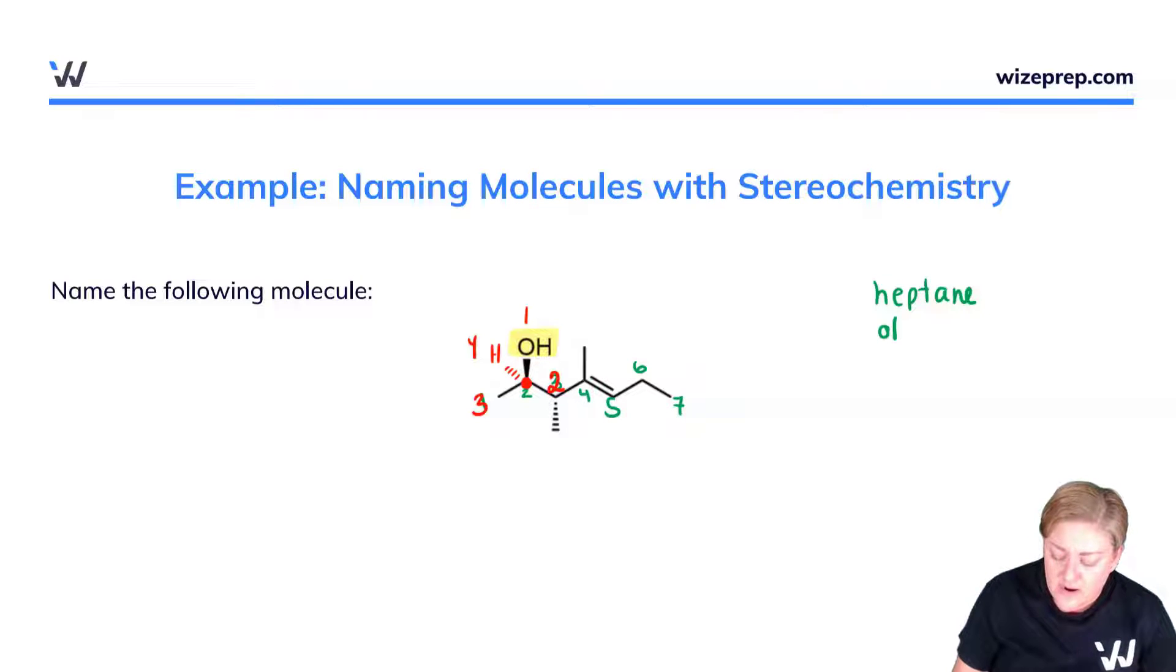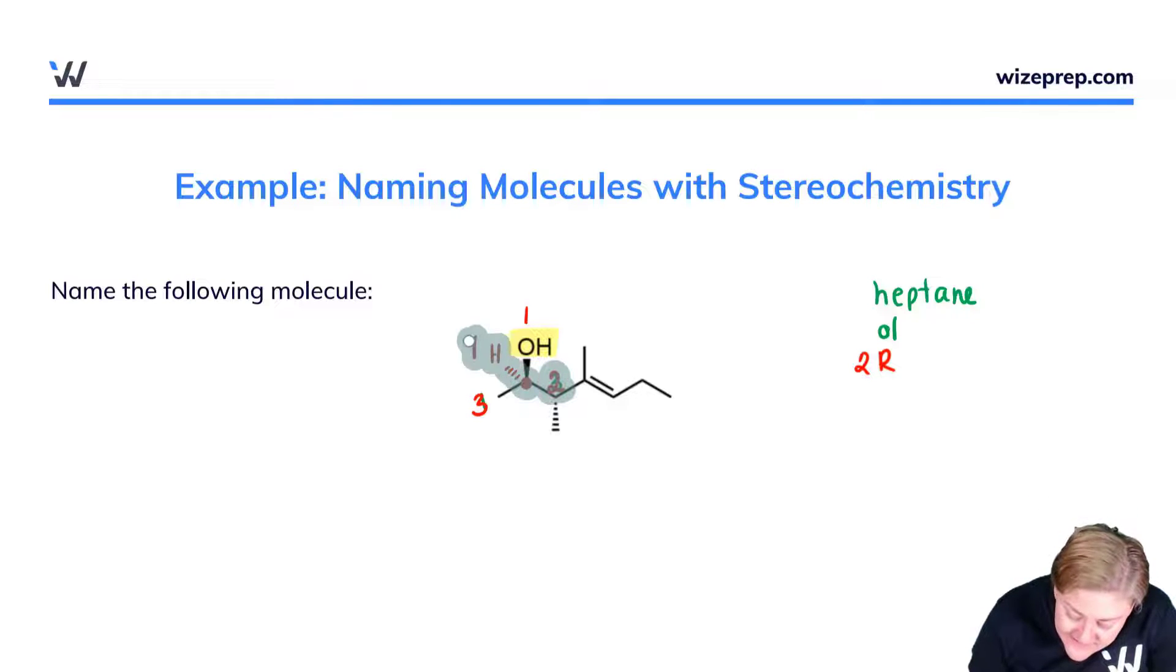And I'm going to get rid of our green carbons for now, just so we can keep track of all of these labels at once. I'll trace from one to two to three, and I will note that it is clockwise and I'll note that group number four is in the back. And so I get to call this 2R, two for the position it's at and R for the stereochemistry. Let me get rid of this red stuff, just so it's easier for us to follow along with each other.